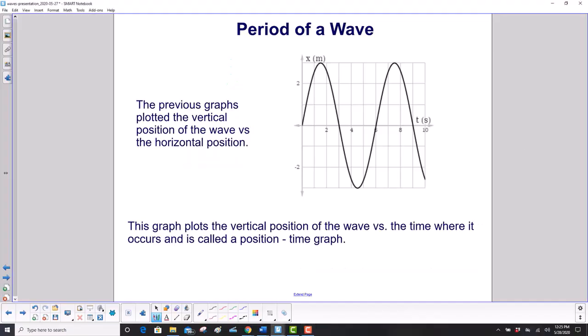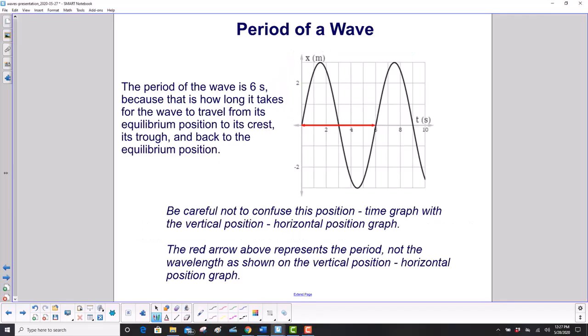The previous graphs plotted the vertical position of the wave versus its horizontal position. This graph plots the vertical position of the wave versus the time where it occurs and is called a position-time graph. The period of this wave is 6 seconds because that's how long it takes for the wave to travel from its equilibrium position to its crest, its trough, and back to the equilibrium position.